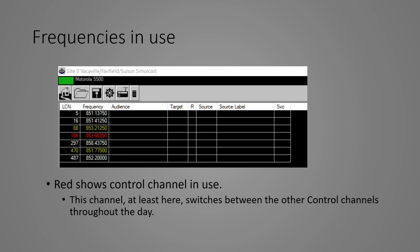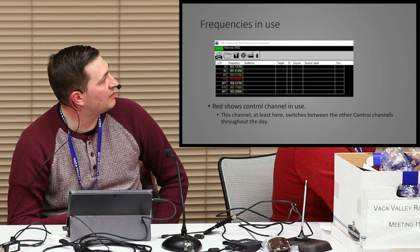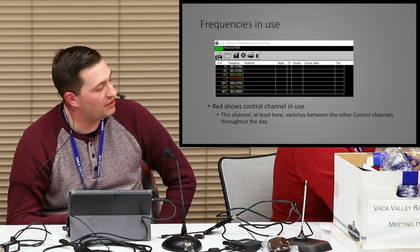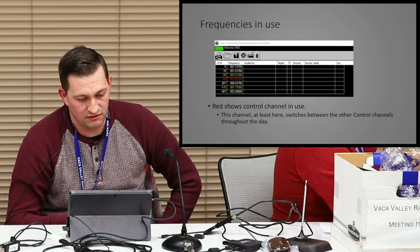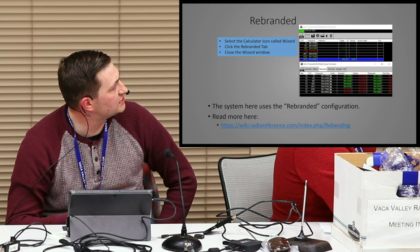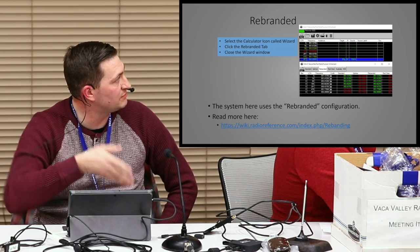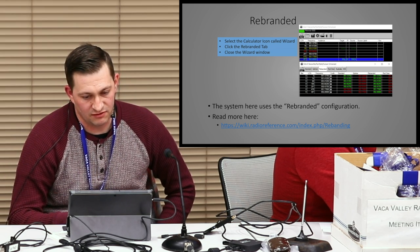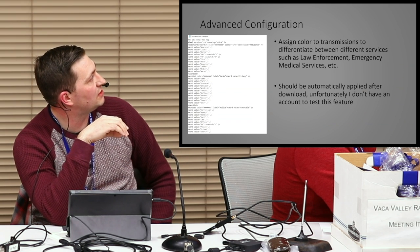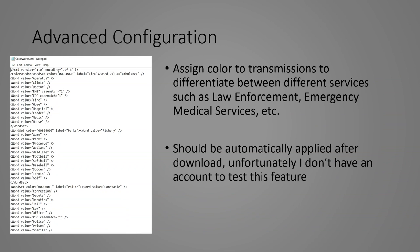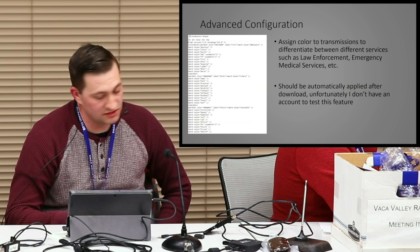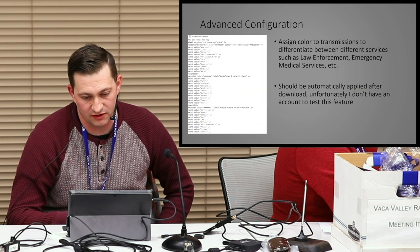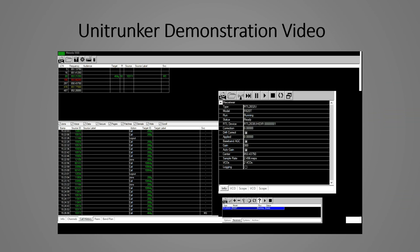When it picks up the control channel, it will pop up a window and auto-populate the band plan for their system. Since we are on a rebanded system, you have to click the calculator and choose where it says rebanded. It will change them all to green. This is optional — if you want to manually label who's talking, like police department, transit, or fire department, you can change it quickly in there.